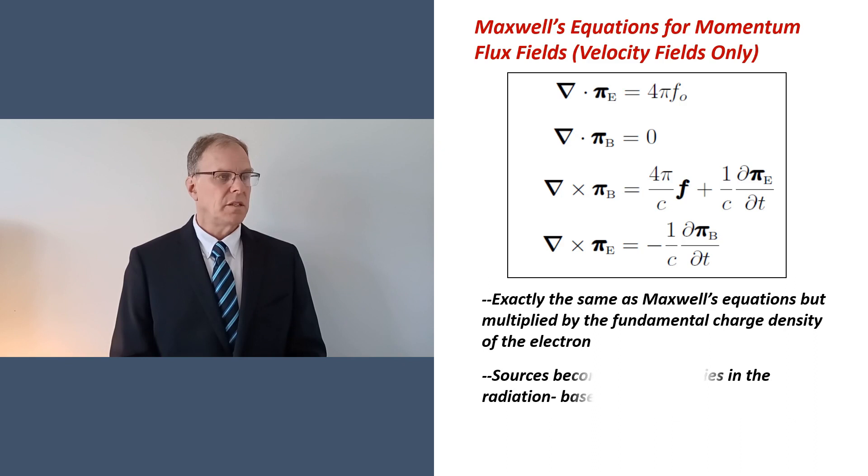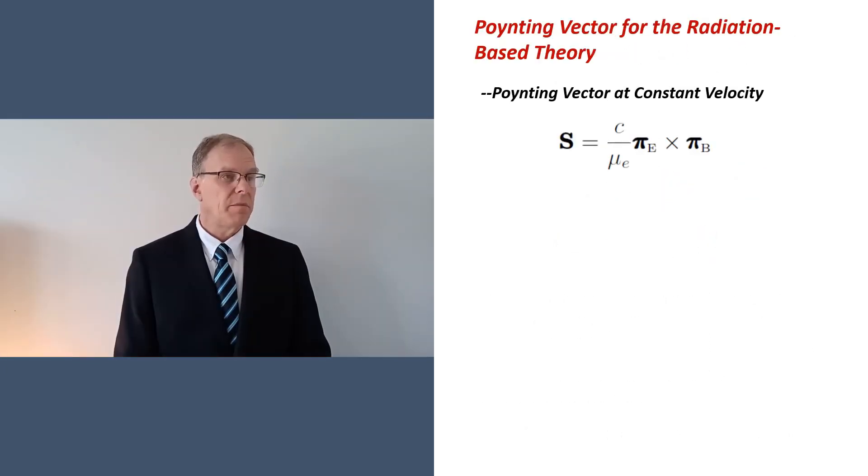If you do this, the sources in these equations will become force densities instead of charge densities. It's also interesting to observe that electrons and positrons both satisfy this set of equations. Now, let's write down the constant velocity pointing vector using the new flux fields. We see that maintaining the pointing vector requires us to introduce a new constant mu sub B having units of pressure. If you do the math, you'll find that this pressure is exactly the outward pressure of a surface charge density, with classical radius R sub B tending to explode the particle.